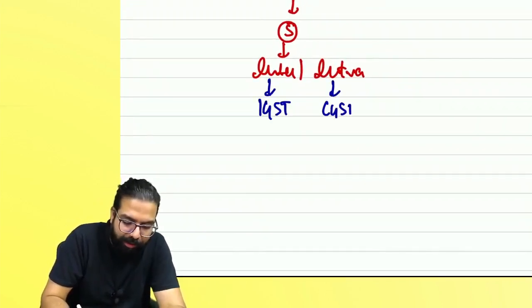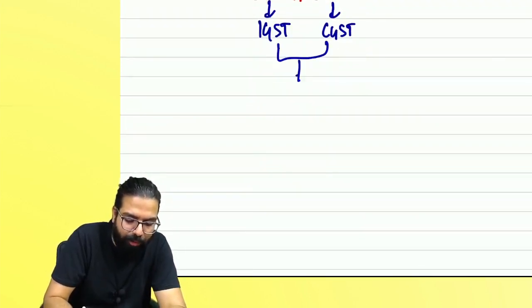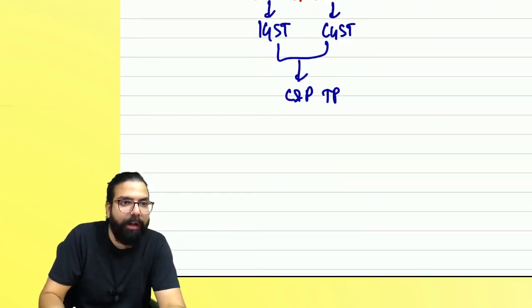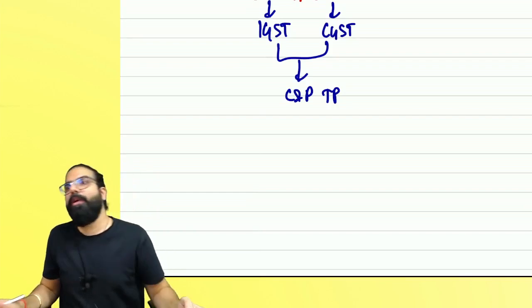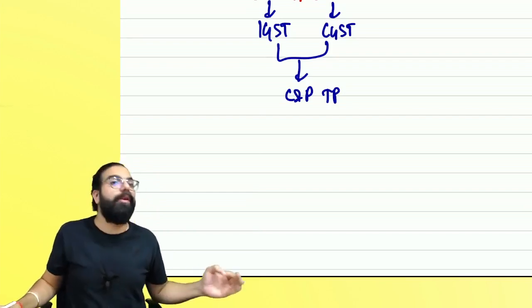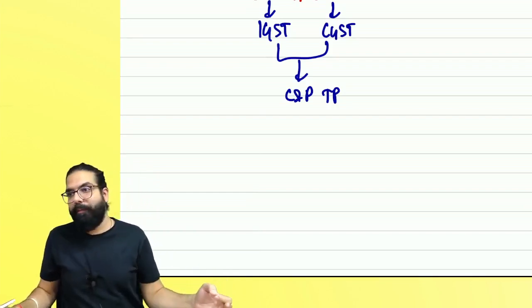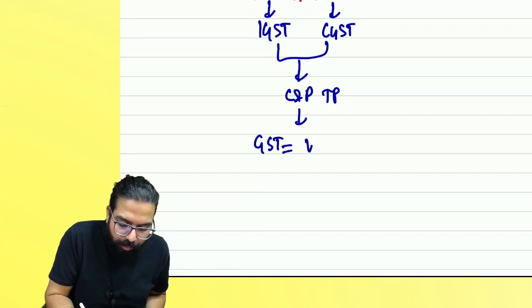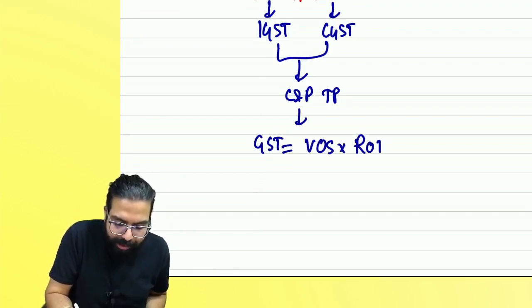For intrastate supply, CGST will be levied. Once GST is levied, GST has to be collected and paid by a taxable person. He will calculate GST. GST is equal to value of supply multiplied by the rate of tax.